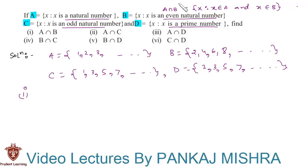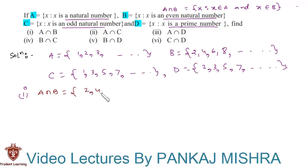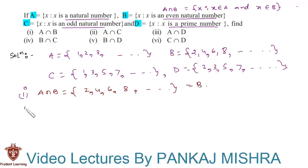In the first section we have A intersection B. The common elements between set A and set B are 2, 4, 6, 8, and so on — this is nothing but the set of even natural numbers, so A intersection B is equal to set B itself.